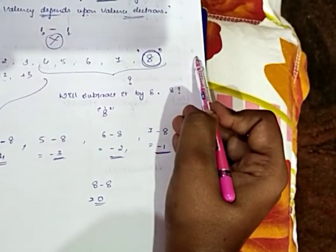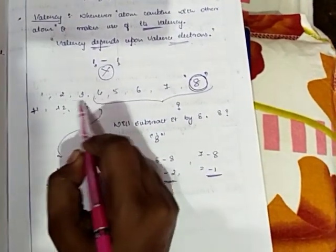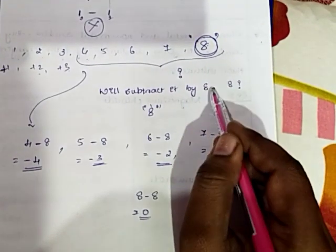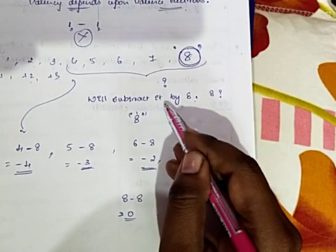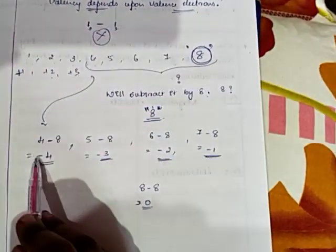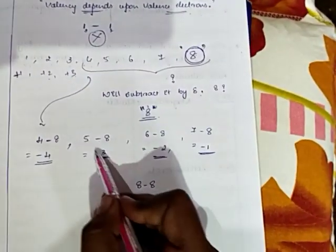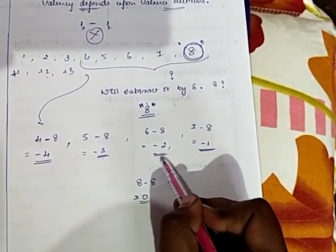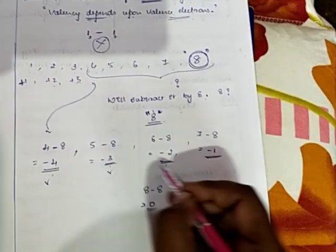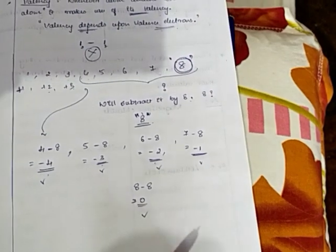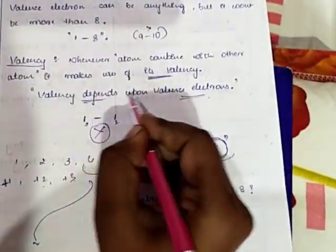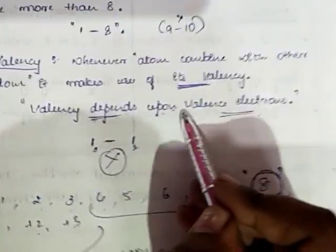So the valencies are: plus one, plus two, plus three for one, two, three valence electrons; and minus four, minus three, minus two, minus one for four, five, six, seven valence electrons. For eight, eight minus eight equals zero. We subtract by eight because valence electrons won't exceed eight. Valency depends on valence electrons.